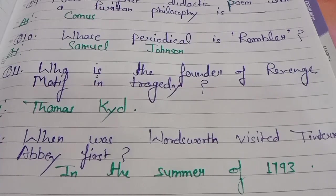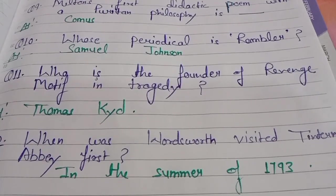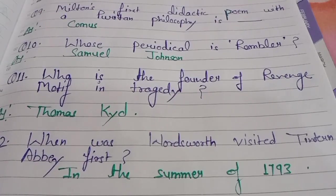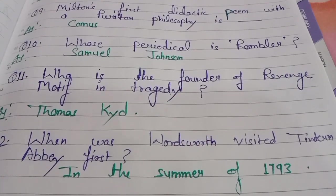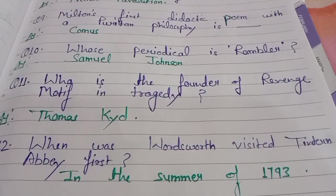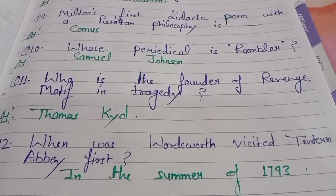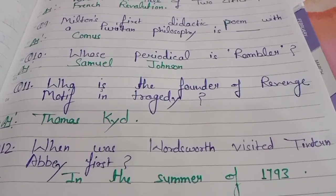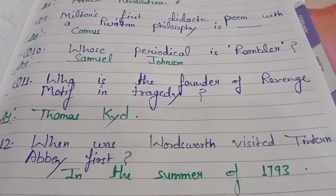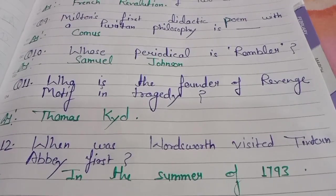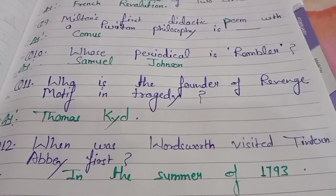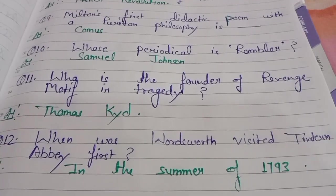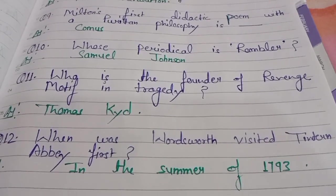This is also an important question — when did William Wordsworth visit France? He first went to France in 1790 and returned to England in December 1792. After returning, he visited Tintern Abbey in the summer of 1793. Tintern Abbey is a monastery located in England.